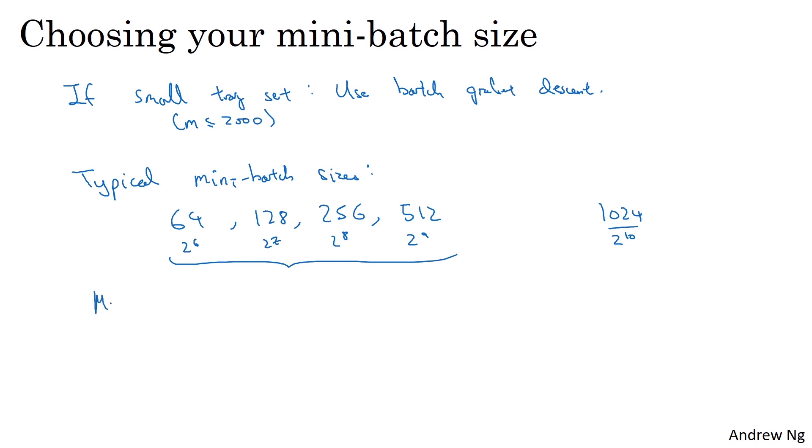One last tip is to make sure that your mini-batch, all of your XT comma YT, fits in CPU/GPU memory. And this really depends on your application and how large a single training example is. But if you ever process a mini-batch that doesn't actually fit in CPU/GPU memory, whatever you're using to process the data, then you'll find that the performance suddenly falls off a cliff and it's suddenly much worse.